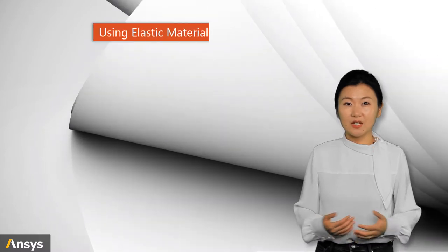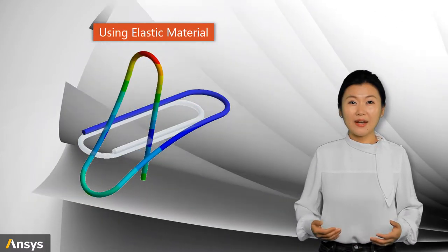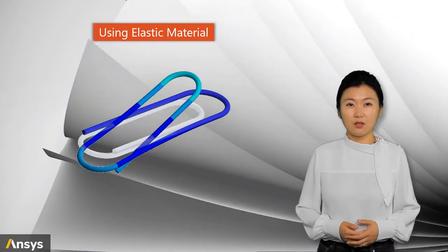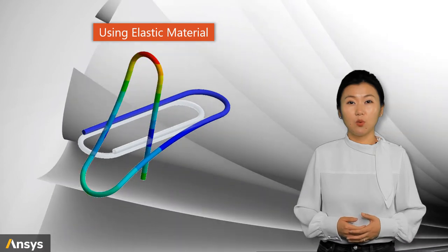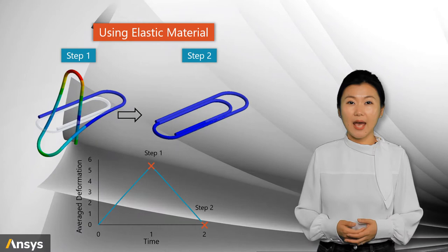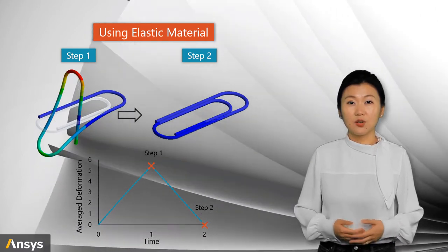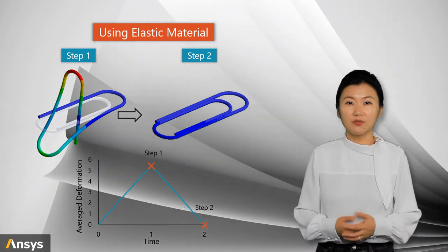Consider this, what if we solve this problem with an elastic material instead of a plastic one? You will find that, no matter how large the deformation is, once the displacement control is released, the paper clip will return to the original configuration. We know that, in reality, this will not happen for a paper clip. So if we are using wrong material model for our analysis, we are losing part of the truth.